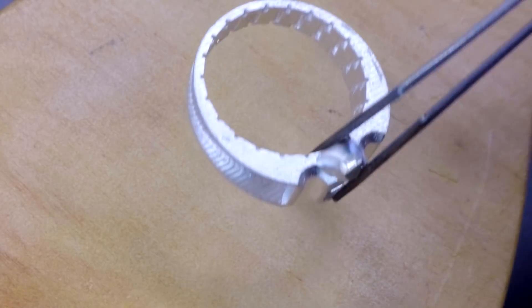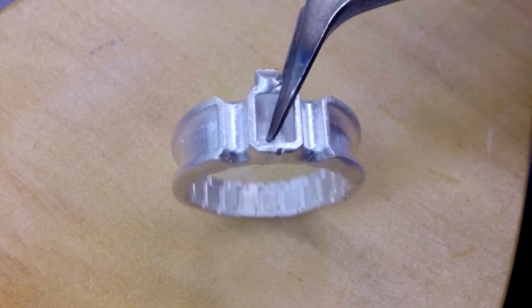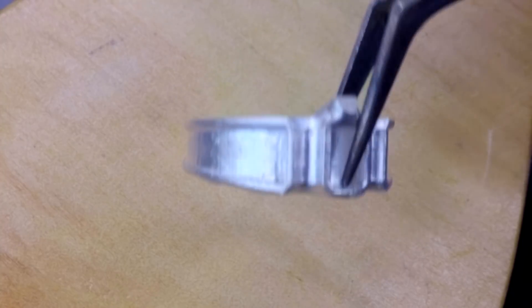Next up is the extruded ring, which is looking pretty good. We knew the layer lines would show here, but they're also on the outside on a flat surface, which means it's easy to remove.